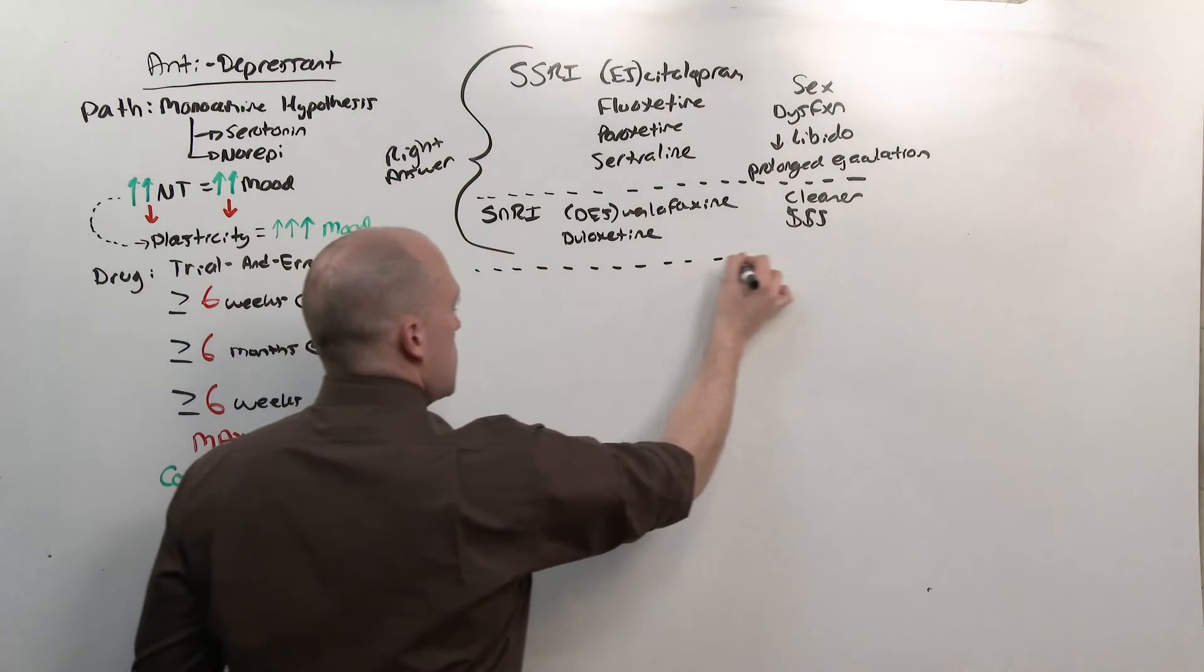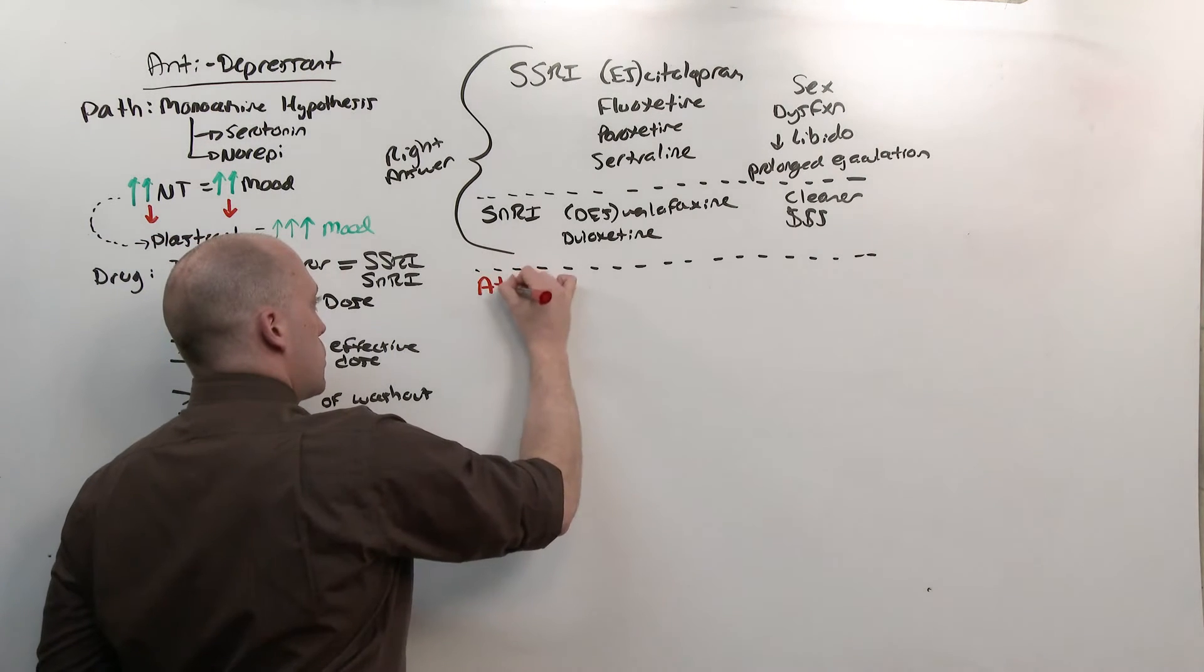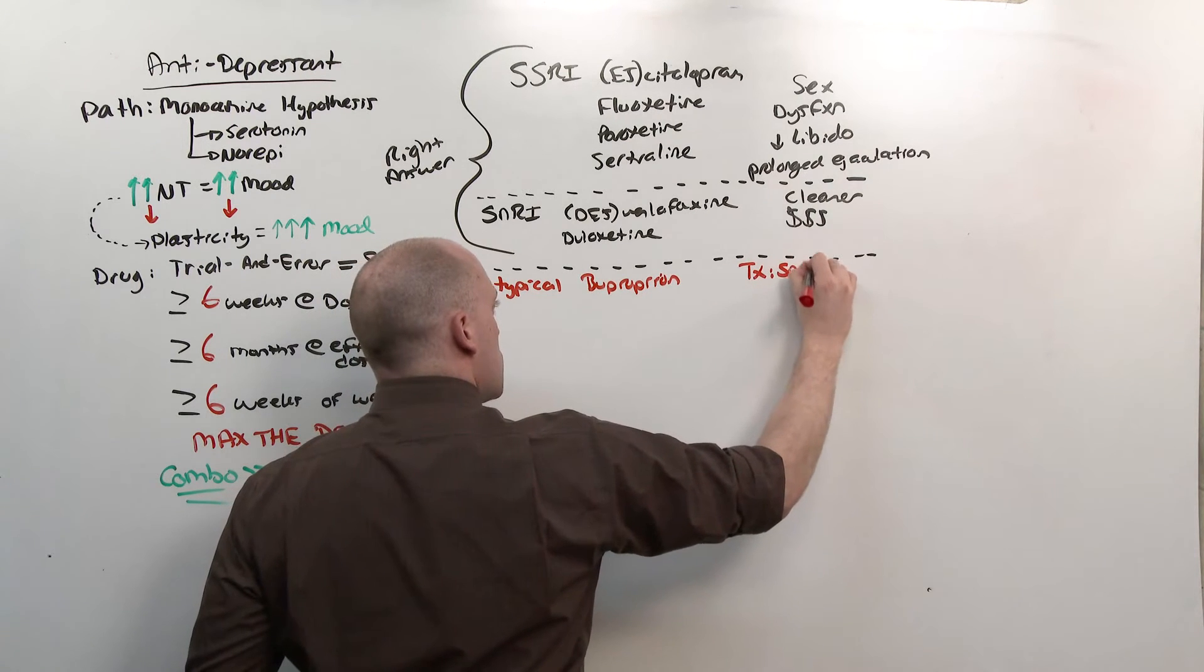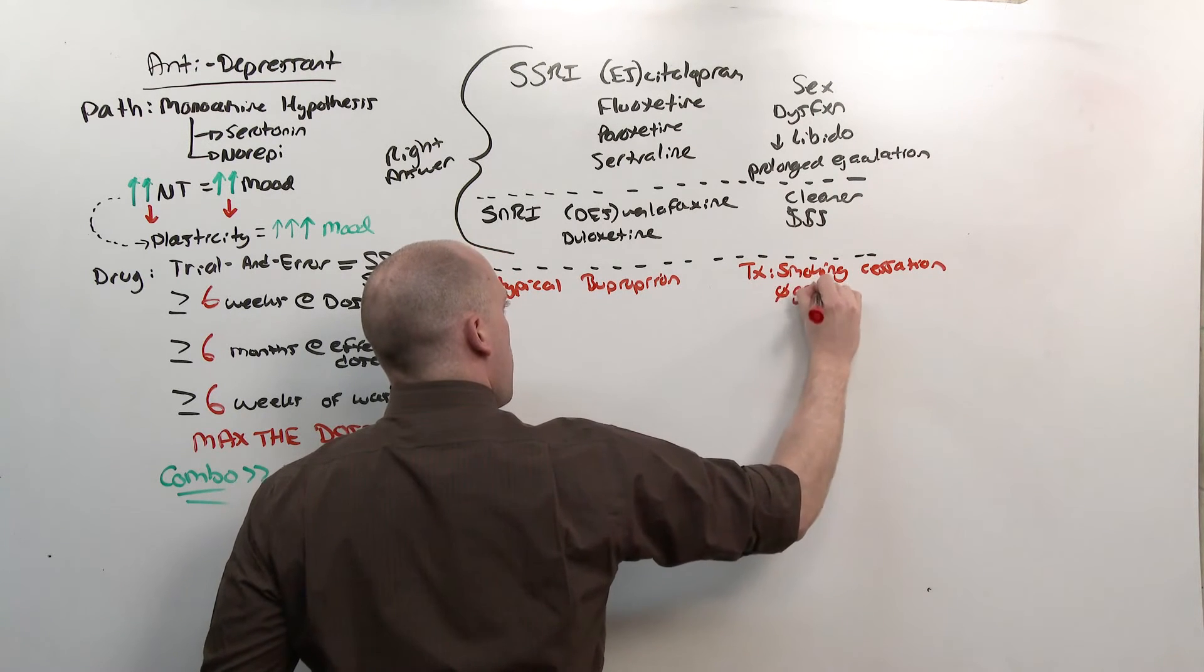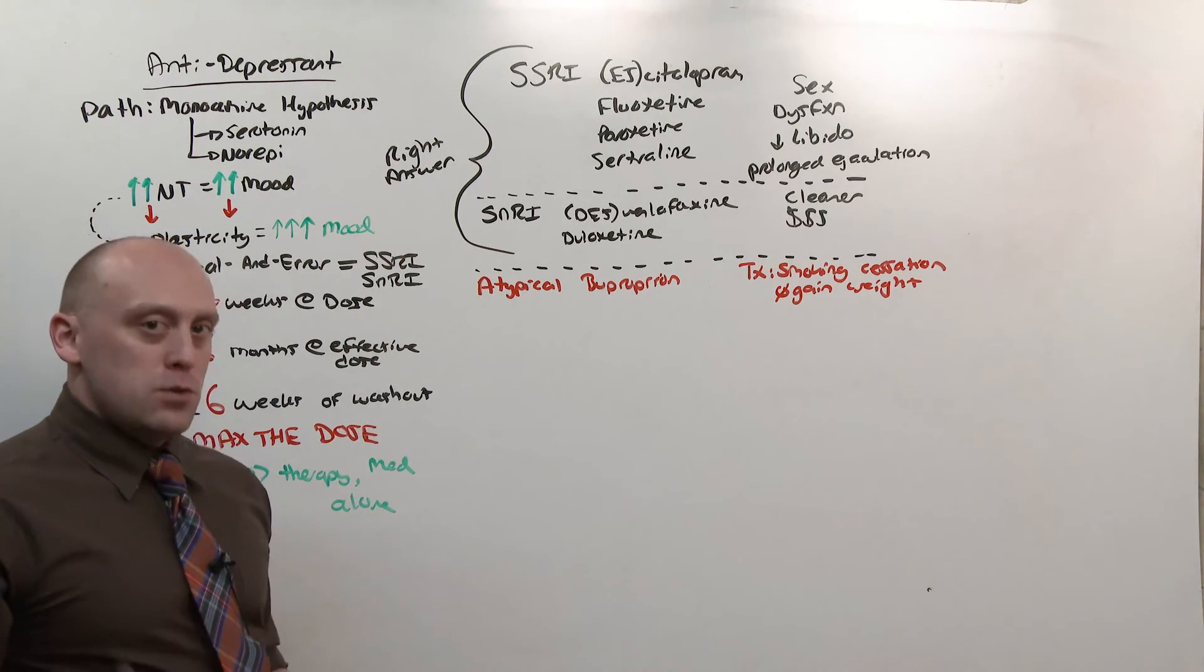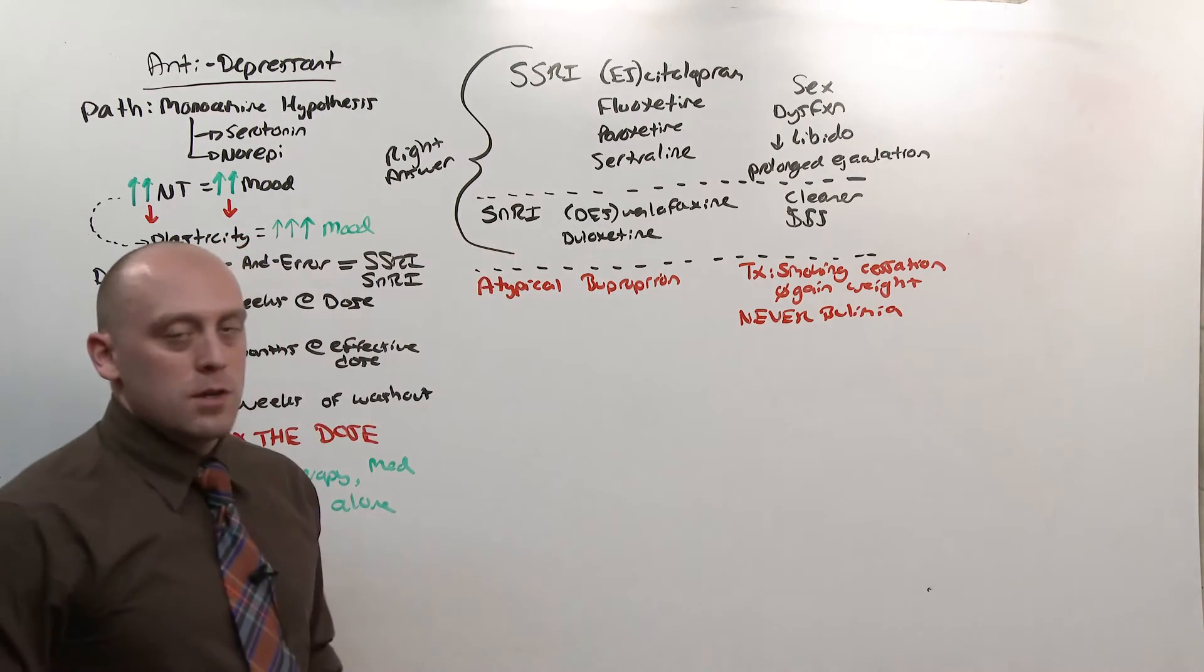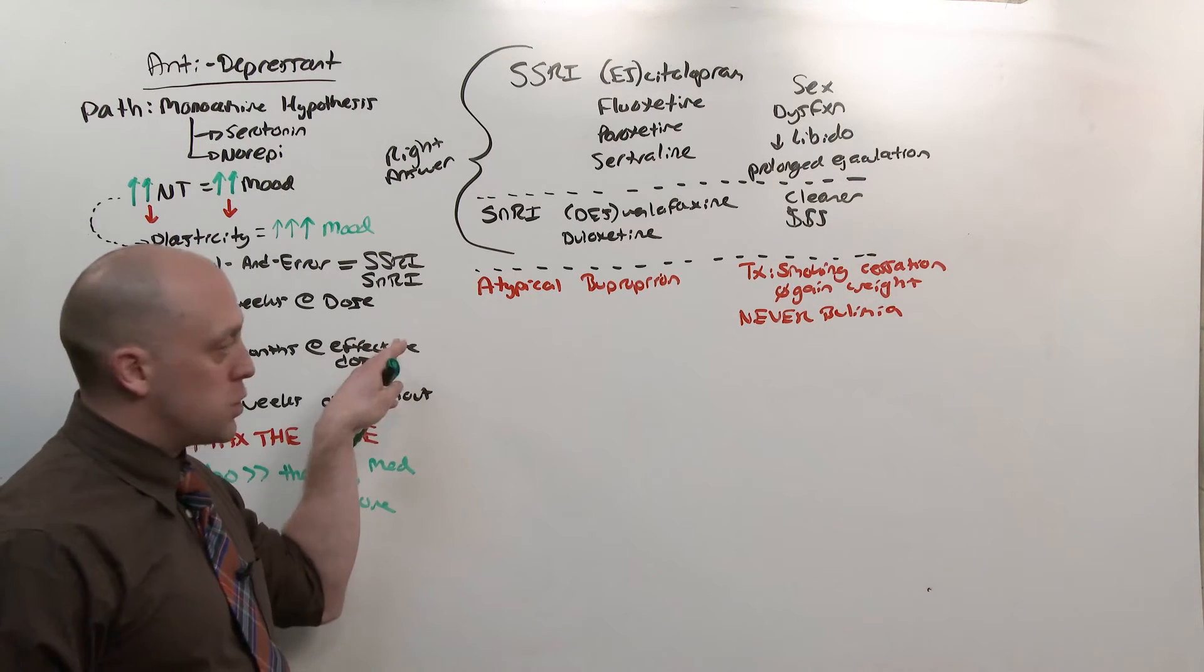It's where you get into these other drug classes that you're going to find really testable information. For example, the atypicals, of which there's only one I want you to learn, bupropion. Bupropion is good at helping people quit smoking, and even though they quit, they don't gain weight. But they cannot be used. They're never used in bulimia because they decrease the seizure threshold. They also happen to have the lowest in the way of sexual side effect dysfunction. So bupropion can be chosen if someone has a little bit of depression and is trying to quit smoking.